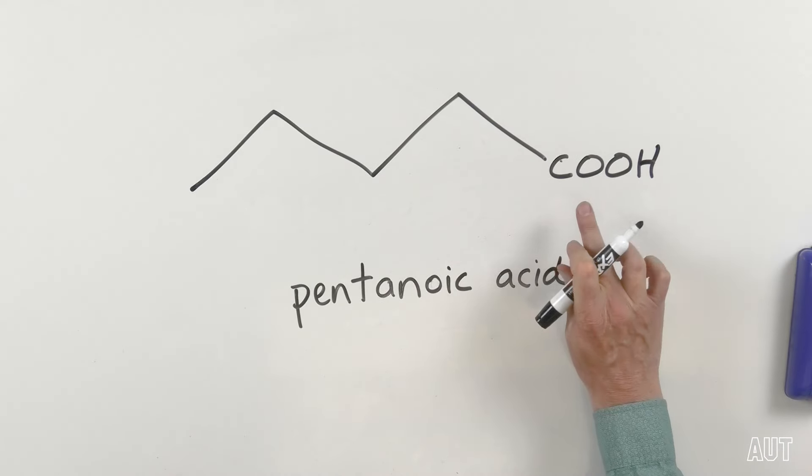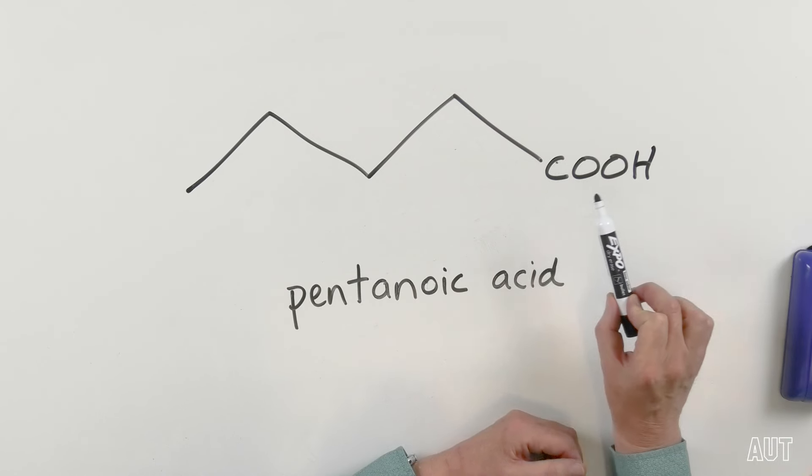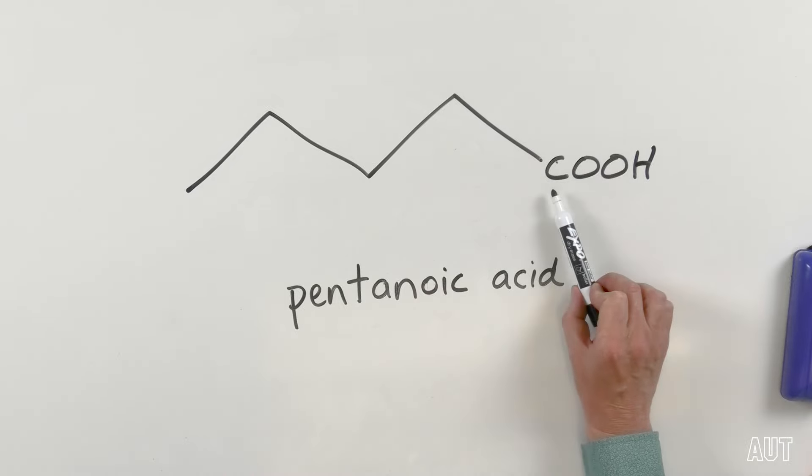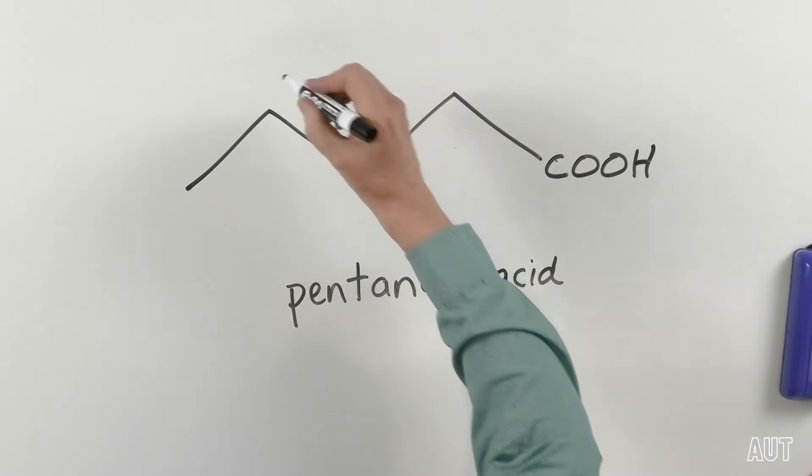Do we need a locant here? Do we need to say where the carboxylic acid is? And the answer is no. Why? The right answer being that a carboxylic acid can only be on the end of the carbon chain. So there is absolutely no ambiguity as to where to place COOH. It's got to go either here or there, in which case it's the same thing. It's on the end of the chain and it's going to be numbered as carbon one, either end. Quite straightforward. Pentanoic acid.